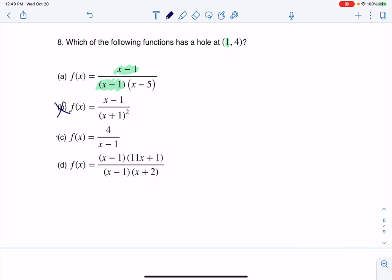And in that same vein, it's not C either because I only have an x minus 1 in the denominator. That would actually be a vertical asymptote. But take a look at D. We've got x minus 1 in the numerator and denominator.